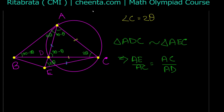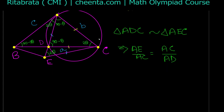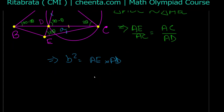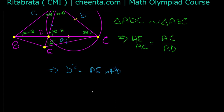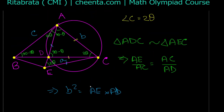We denote side lengths by the usual names: AC as small b, BC as a, and AB as c. From the similarity ratio AE/AC = AC/AD, we get b² = AE · AD. Now to find angle θ, I have to express AE and AD individually in terms of the side lengths of triangle ABC and trigonometric functions of θ.